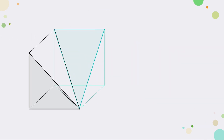If we take these — here's one, here's two, and here's three — these three make a cube. The dimensions of the cube would all be the same: B times B times B. Therefore, the volume of this cube is B³.